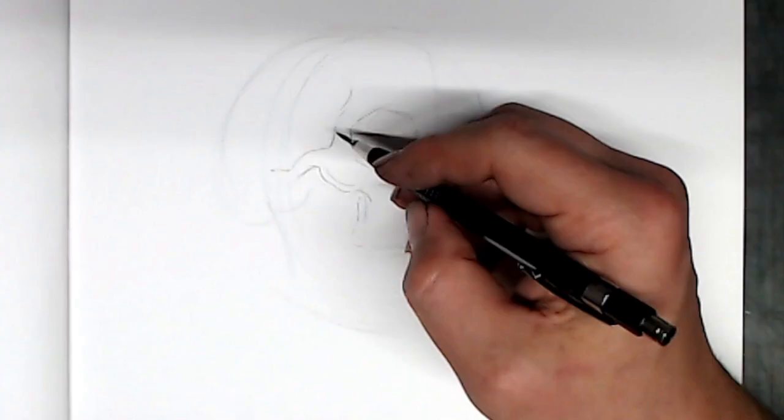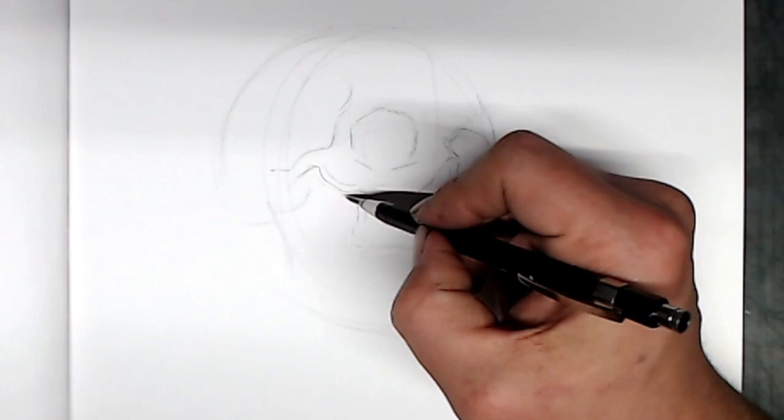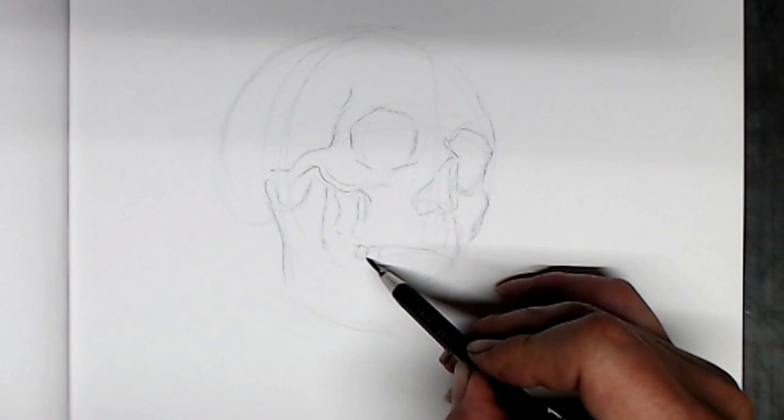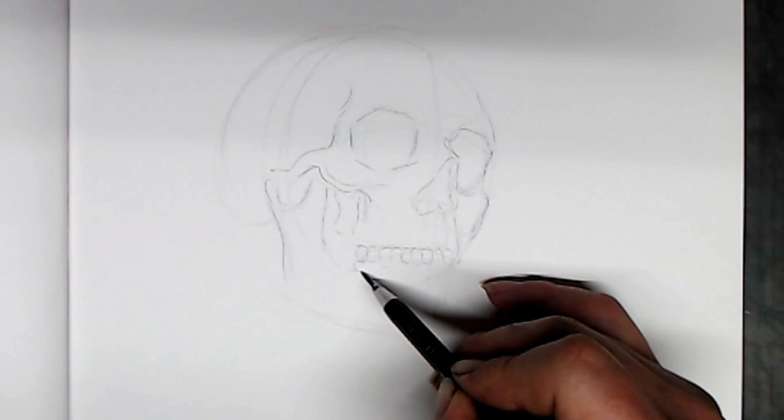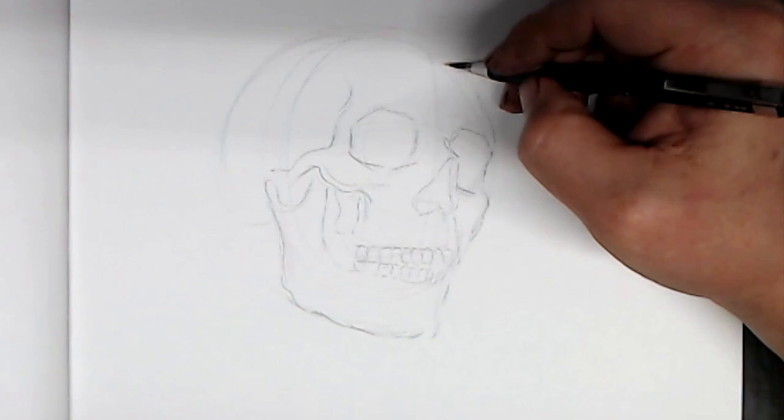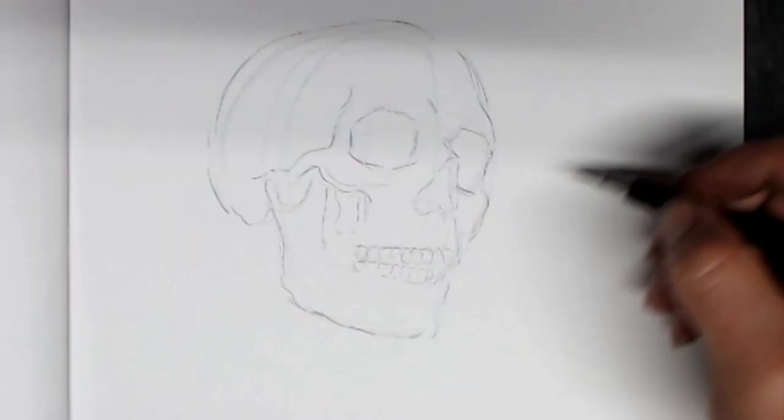Plus, penciling allows you to make compositional decisions, proportional decisions that are a little bit difficult to make while you're doing the pen and ink drawing. So, penciling kind of frees up your brain to focus just on the line quality and make your drawing better. Make sure you're using either a 2B or a slightly lighter pencil because if you start going into 4B or 6B, those lines will be a little bit harder to erase later.